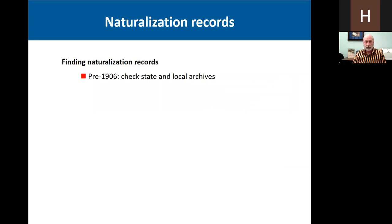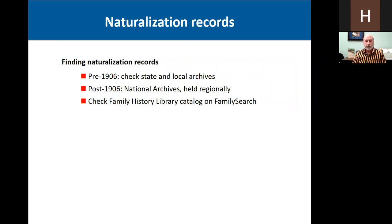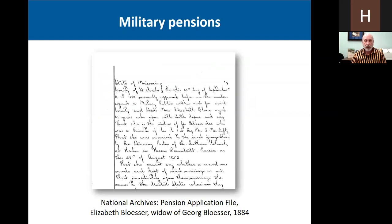For finding naturalization records: for pre-1906 records, check state and local archives because they were generally kept locally. Post-1906, the National Archives preserves them, and those are held regionally — for St. Louis, they are held at Kansas City. Also check the Family History Library catalog on FamilySearch; many of these records have been microfilmed and are available on FamilySearch, now digitized. Also check for published sources — many places have available naturalization indexes or abstracts, so check the library catalog for the place where your ancestors lived in the United States.